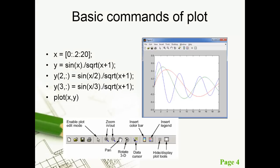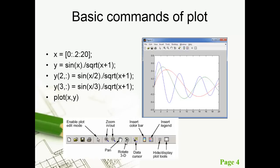Then, basic commands of plot. So, plotting the x versus y axis or x values versus y values. x is the independent variable, an array starting from 0 to 0.20 with increment of 0.2. y is a dependent variable, y is a function of x. y2 with colon indicates the second row of y values, and y3 indicates the third row of y values.